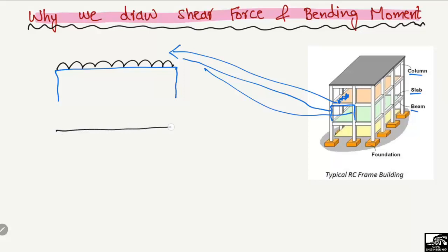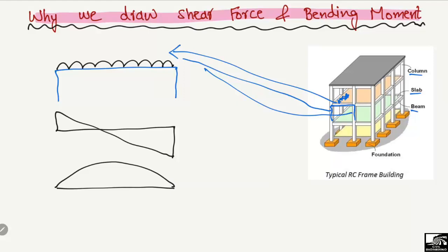Now we will have to draw the shear force and bending moment diagrams. The shear force diagram will look like this, and the bending moment diagram for the simply supported beam will look like this. We can see that there will be maximum moment here at this point — we call it Mu — and at these two ends we will have maximum shear forces, Vu.